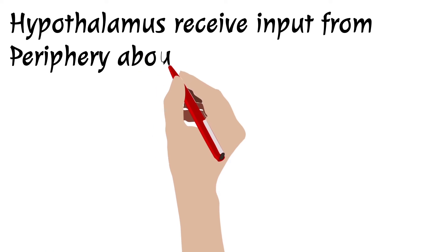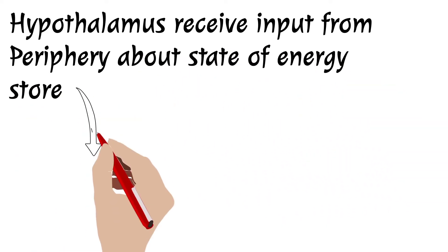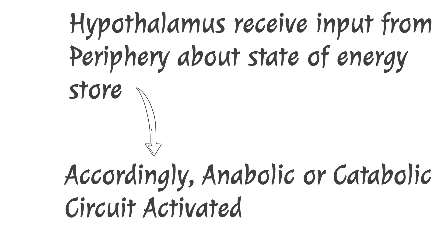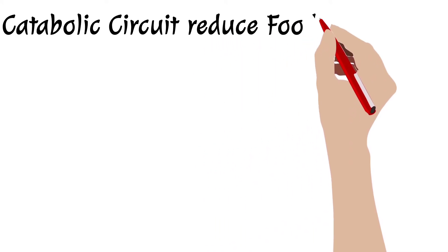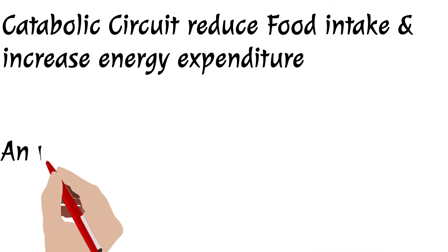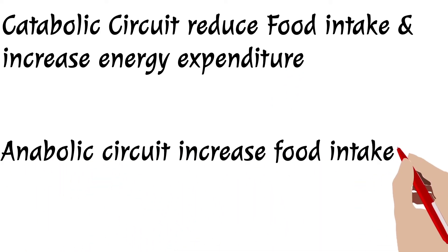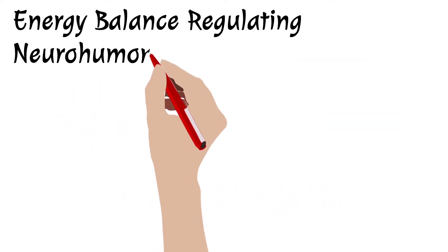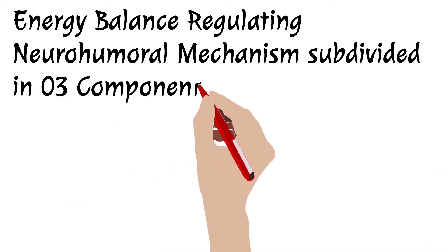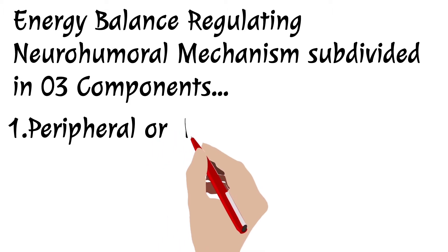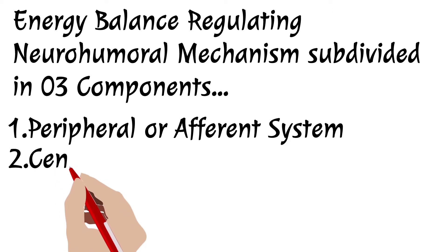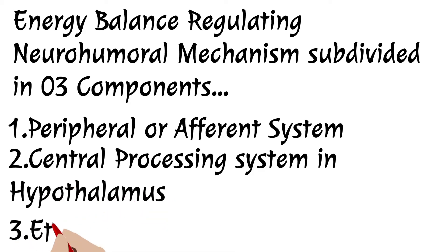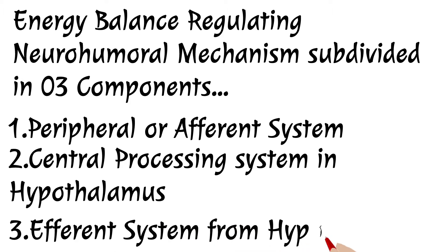The hypothalamus receives input from the periphery about the state of energy stores, and accordingly an anabolic or catabolic circuit gets activated. The catabolic circuit causes reduction of food intake and increase in energy expenditure, while anabolic circuit activation means increased food consumption and reduced energy expenditure. The energy balance regulatory neurohumoral mechanism has three components: a peripheral afferent system, a central processing unit, and an efferent system.